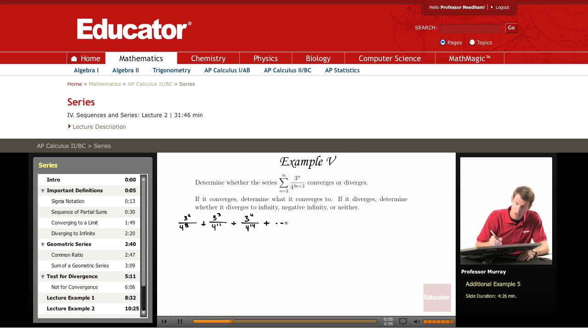And what you might notice here is that each one of these terms is a common ratio multiplied by the previous term. Because this second term is equal to the first term times 3 divided by 4 cubed. And to get from the second term to the third term, we multiplied by 3 divided by 4 cubed.